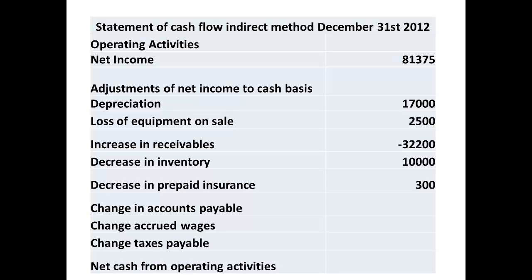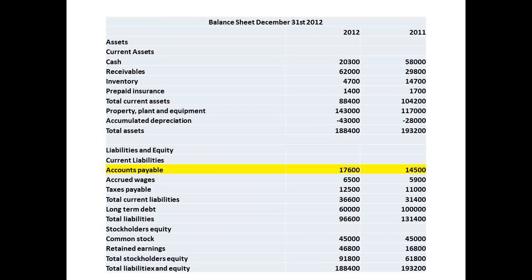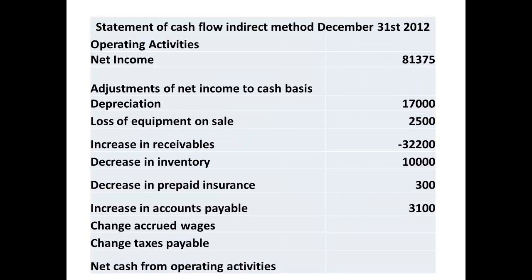Next, we look for changes in accounts payable. Accounts payable have increased from $14,500 to $17,600. This represents an increase in cash owed — or put another way, we have not paid the sum out as cash. The difference of $3,100 is to be added back in.